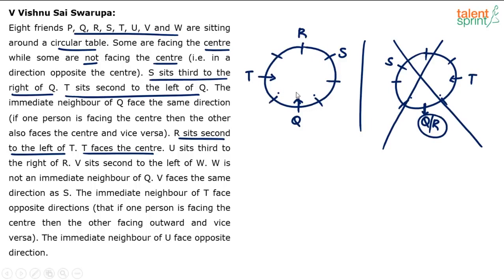So the arrangement so far is Q, T, R, and S, where both Q and T are facing center. The directions of R and S are not yet known. The next point says U sits third to the right of R. Third to the right of R has two possibilities depending on which direction R is facing — either first, second, third one way, or the other.